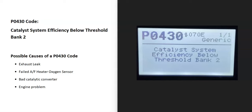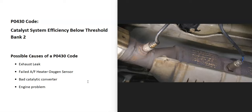Today I'm talking about a P0430 code: what it is and how you go about fixing it. A P0430 code means 'catalyst system efficiency below threshold bank 2.' There are sensors located on the exhaust, and one of the things they're doing is monitoring the catalytic converter. When the catalytic converter falls below 95% efficiency, it reports this back to the onboard computer, which sees a problem and triggers the code.